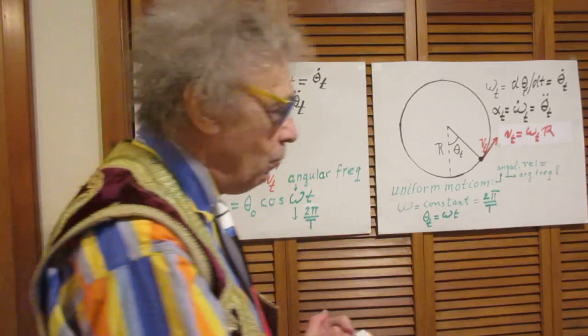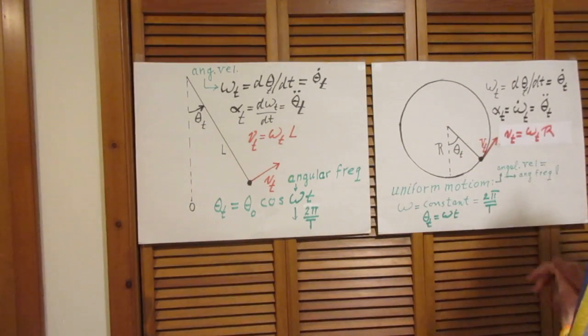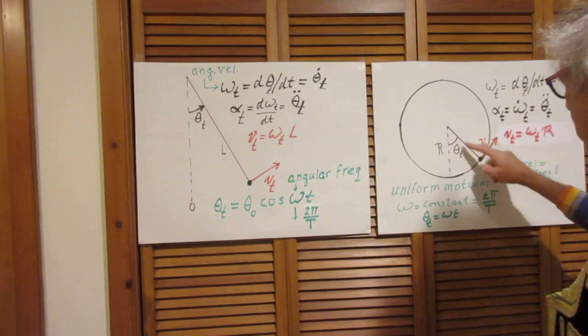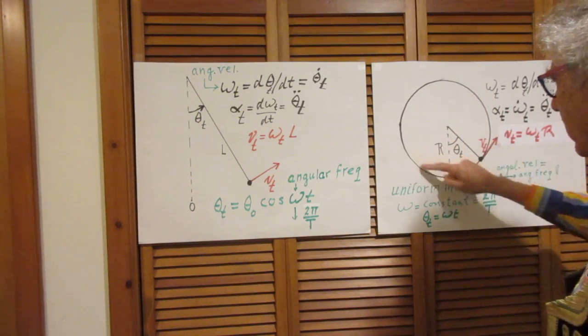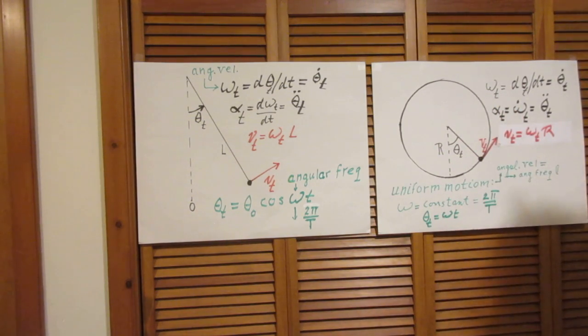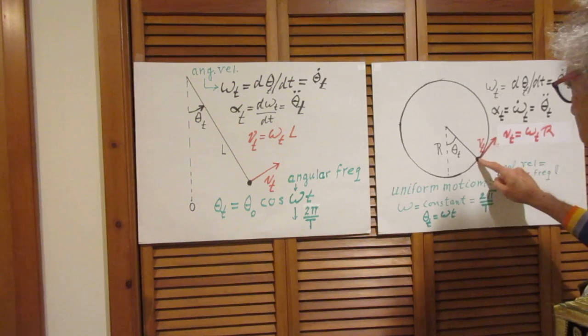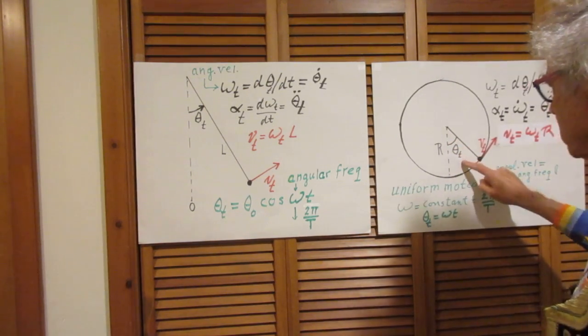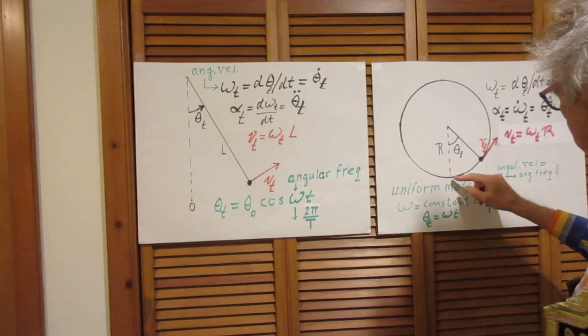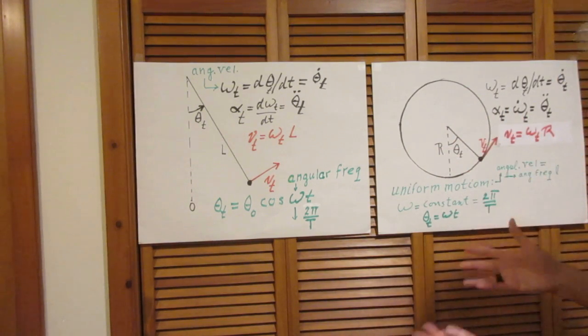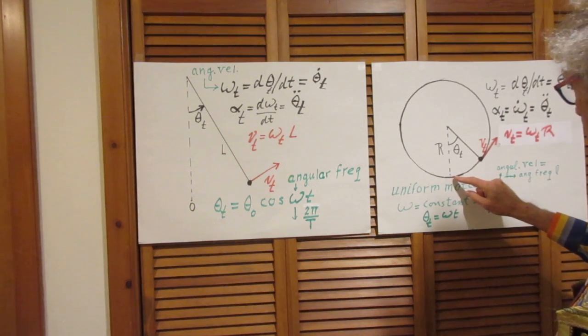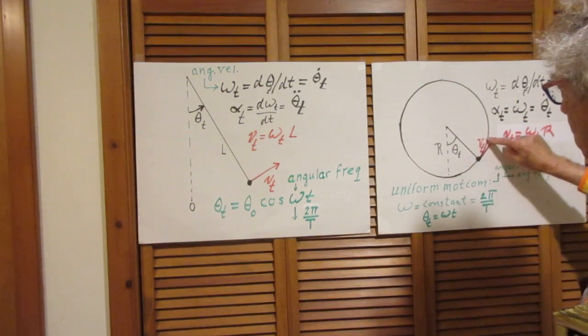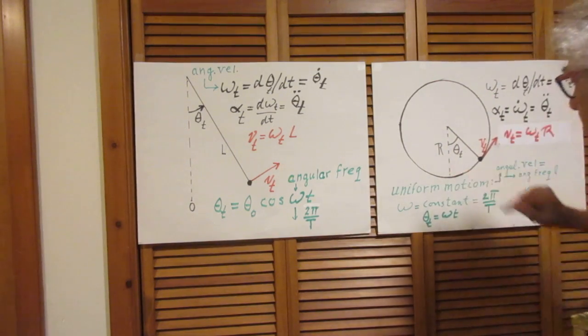So let's now look at the motion of an object in a circle with radius r. It could be a string here, but it doesn't have to be a string. Again, we'll just assume that the object, for whatever reason, goes around in a circle. If the object is here, I call this angle with the vertical theta. It changes with time. The speed in the circle doesn't have to be constant at all, of course. The object could do this. So the speed would change in time.